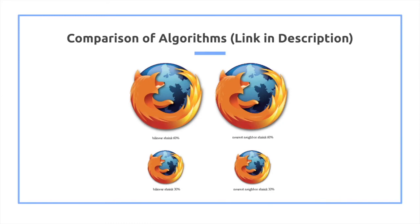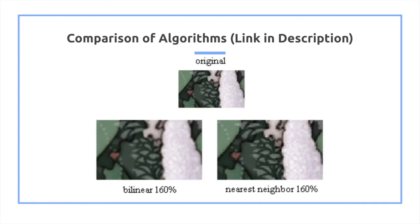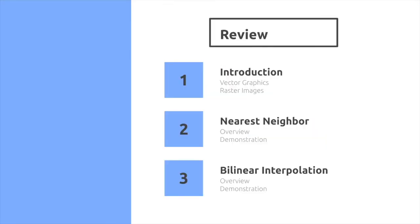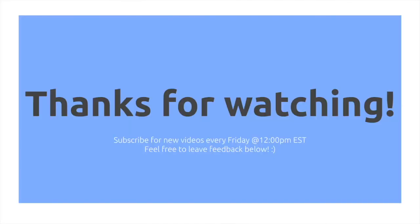So here's an example if you want to look through a comparison of bilinear shrink and nearest neighbor shrink or upscale using bilinear and nearest neighbor. Bilinear tends to be better. Thank you very much for watching and please subscribe for new videos published every Friday at 12 p.m. Eastern.